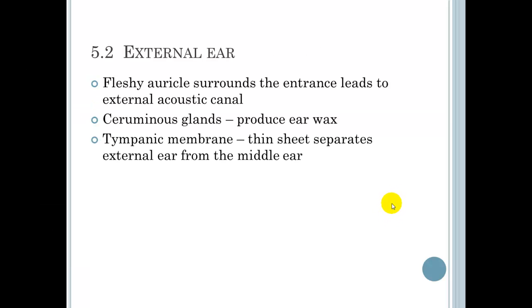The external ear is pretty much the outer surface, or the external area. A fleshy auricle surrounds the entrance, which leads to the external acoustic canal. This has a bunch of glands in it, ceruminous glands, and they produce earwax.